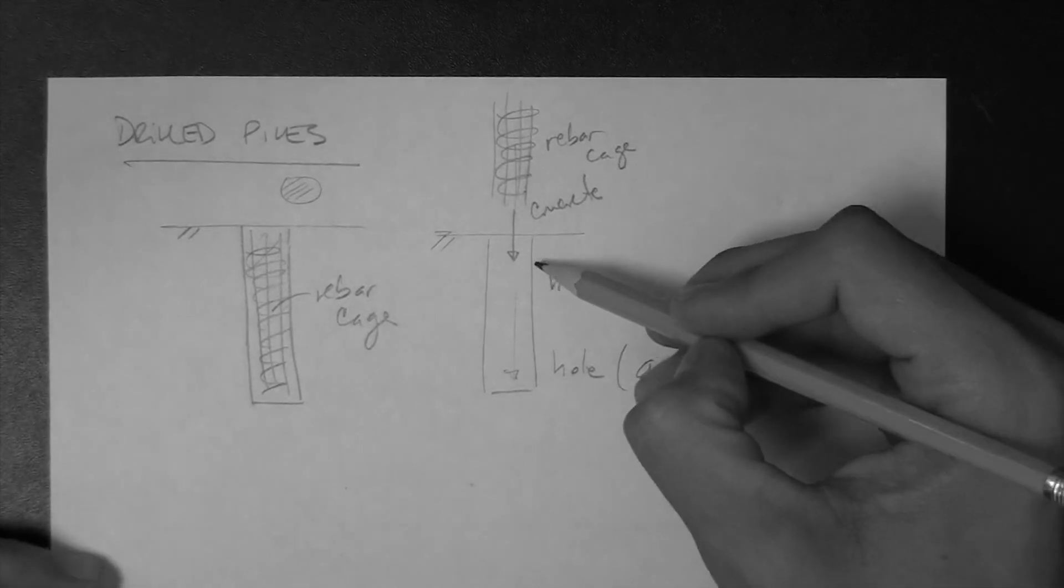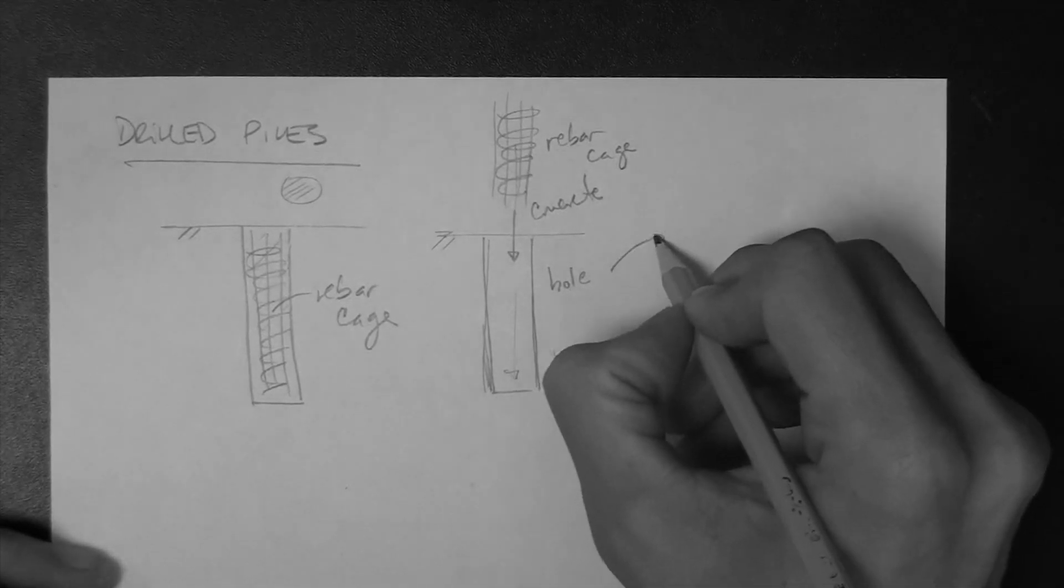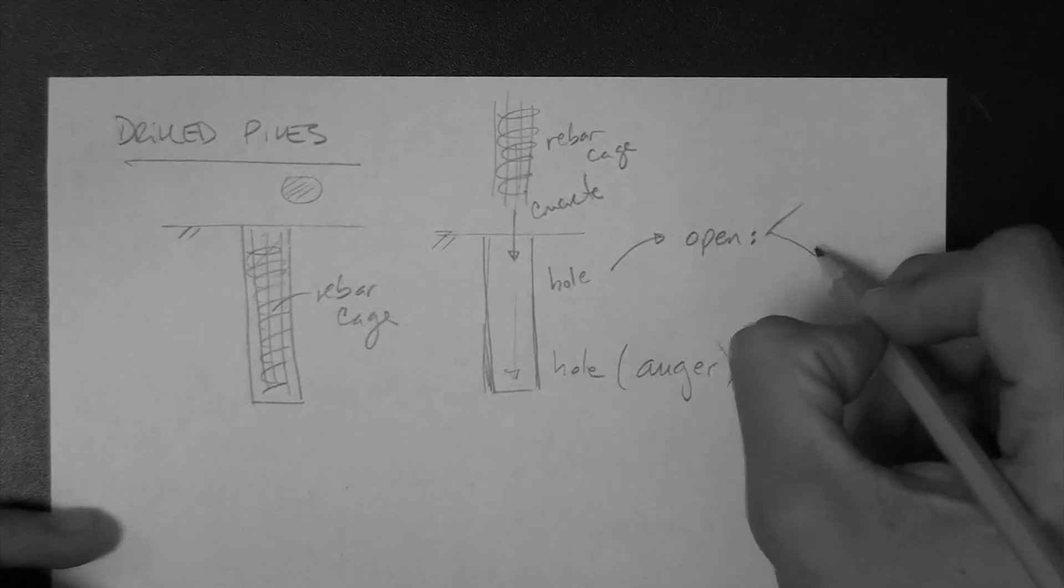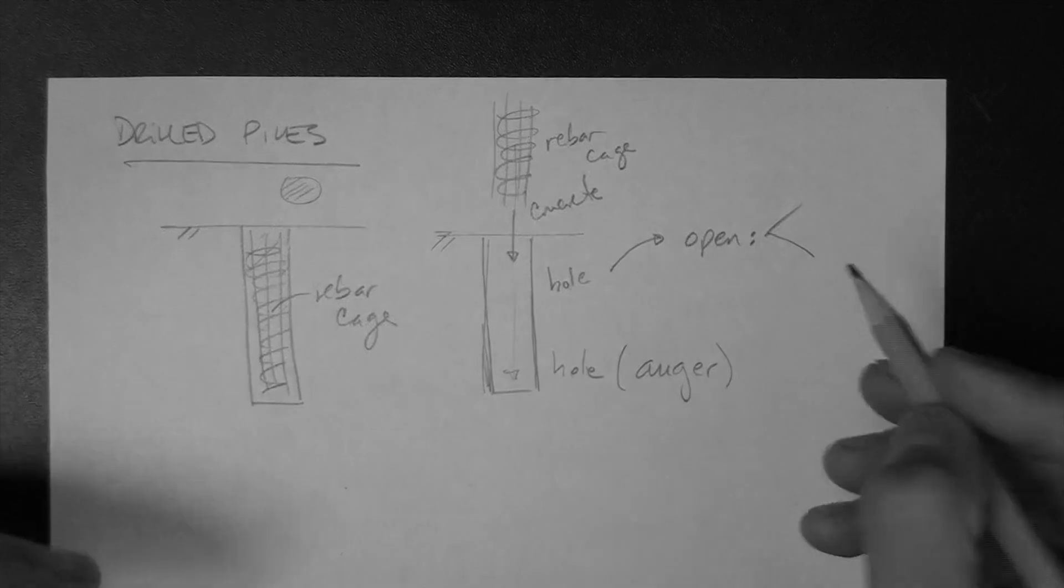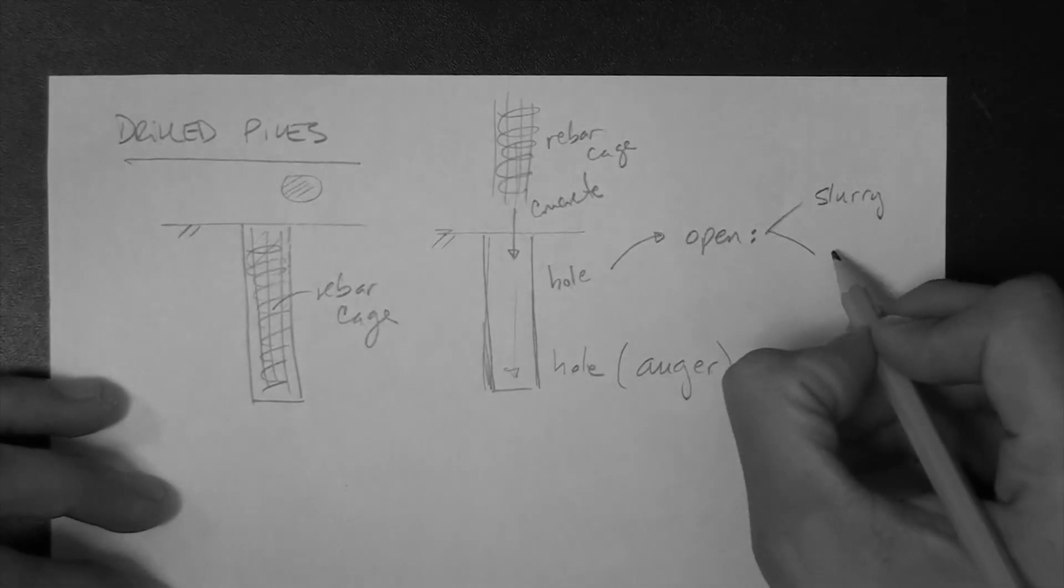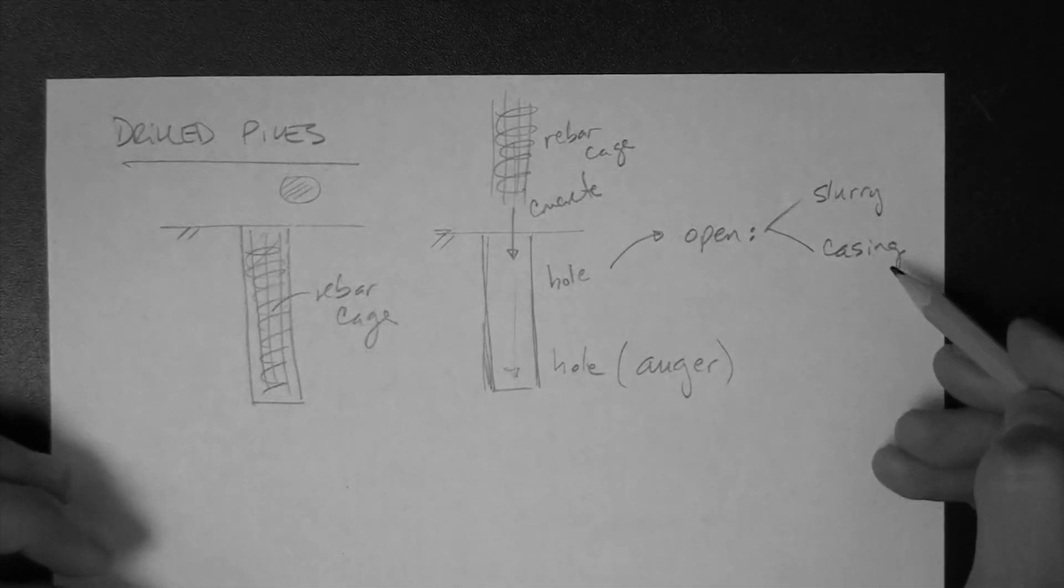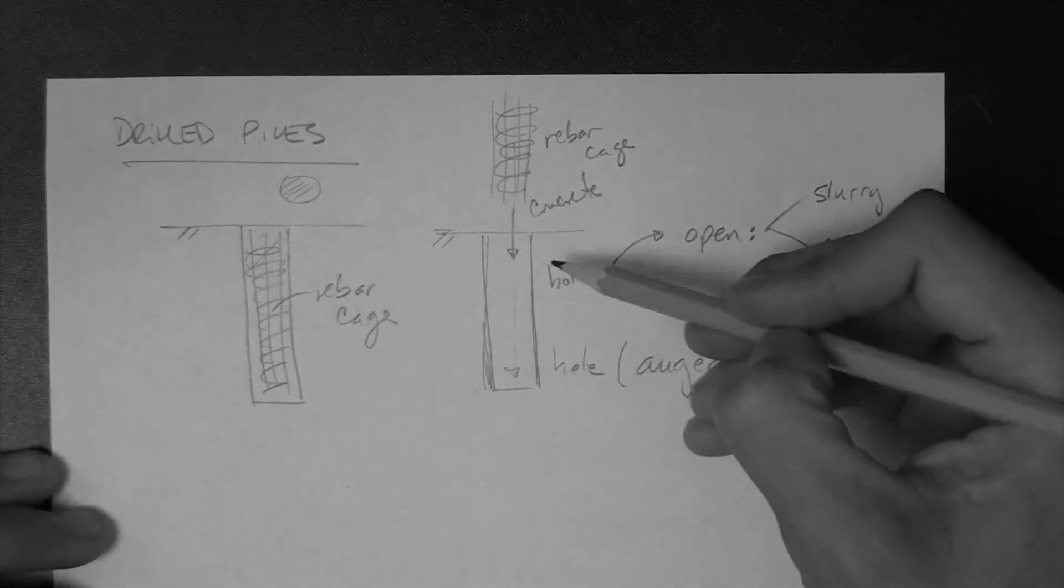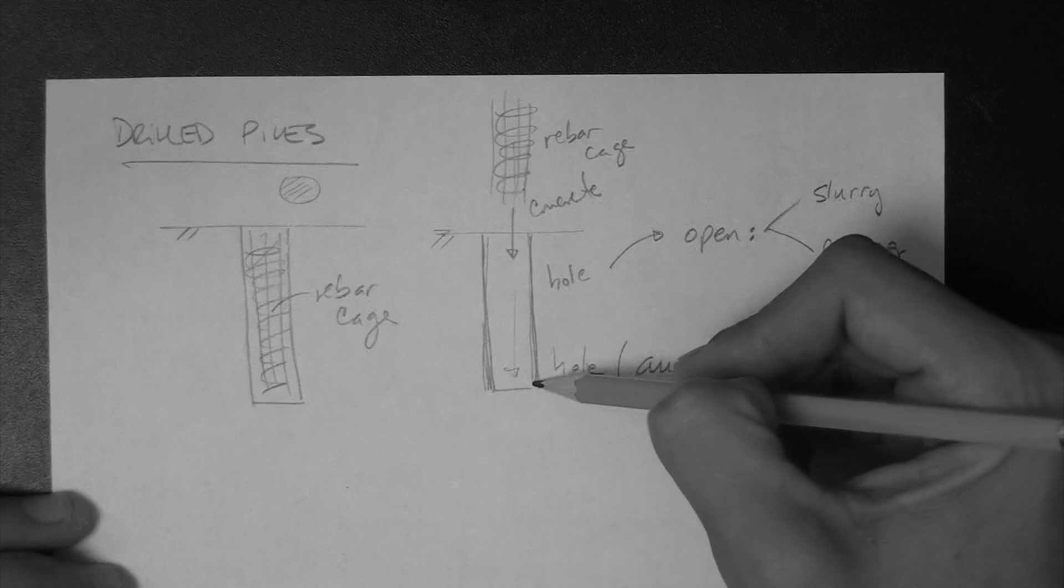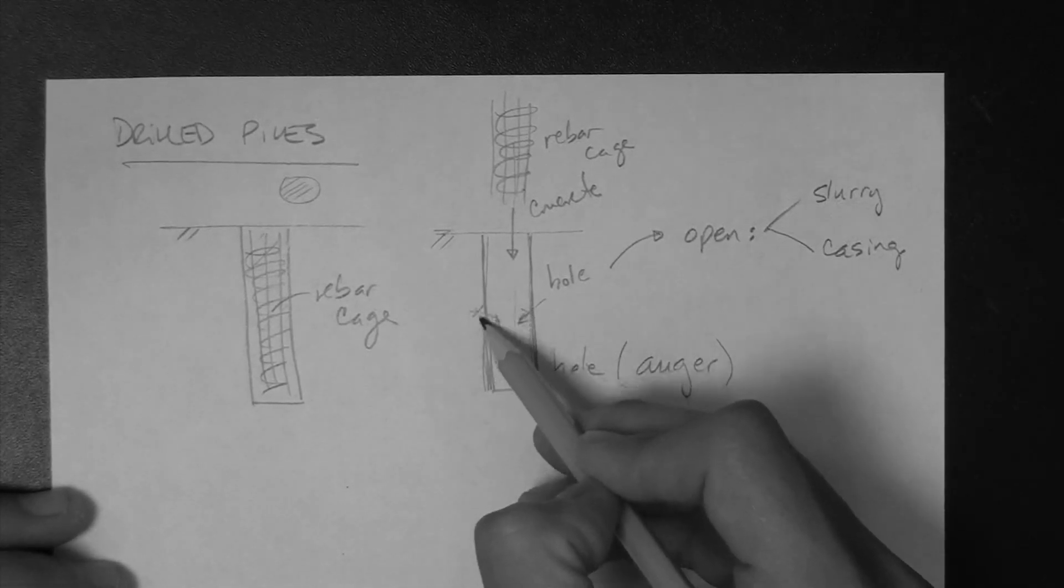The major challenges are keeping the hole open. So for that, to keep the hole open, there are essentially two things that are done. One is to use a slurry, and the other one is to use a casing. A casing is essentially a steel tube that is pushed in, so that it creates the sides of the hole, so that the soil doesn't cave in.